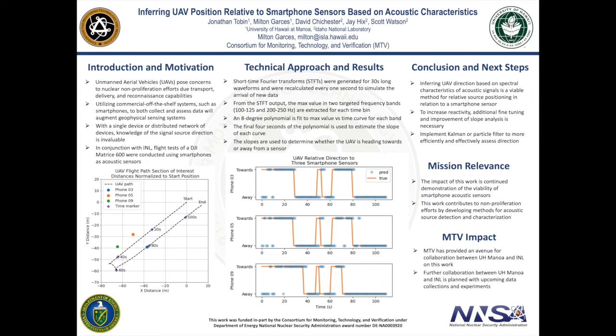The slopes in both bands are compared to one another as well as previous states to determine direction — namely towards or away from the sensor. Initial results for three phones can be viewed in the center figure on the poster.